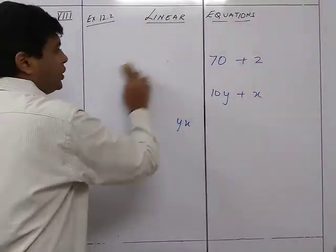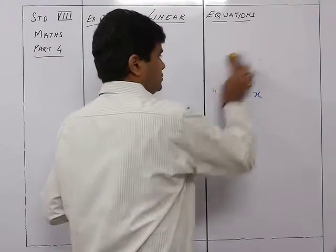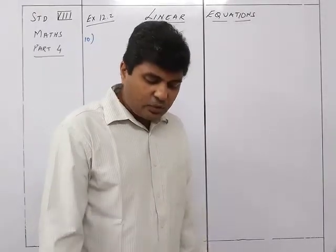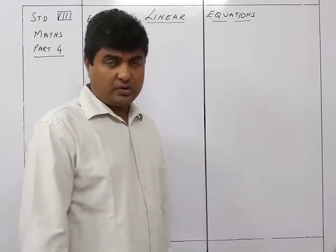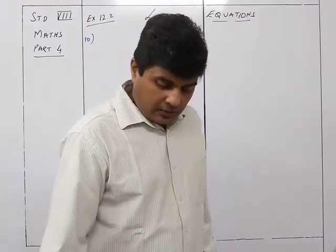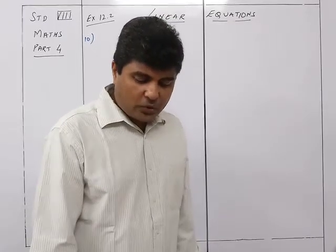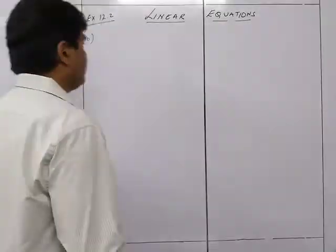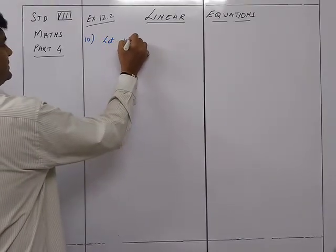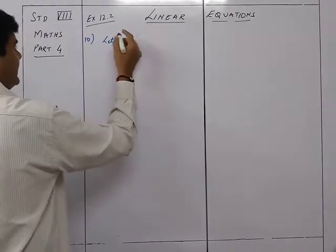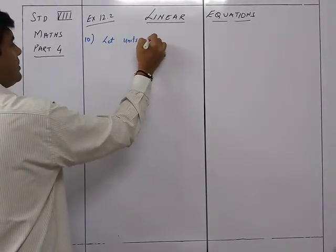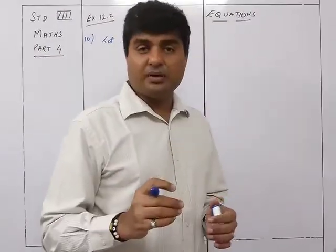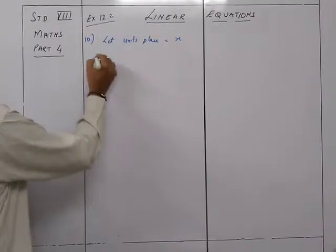Let's see sum number 10: the digits of a two-digit number differ by three. If the digits are interchanged and the resulting number is added to the original number, we get 143. What is the original number? We will let the units place be x. Since the digits differ by three, the other digit will automatically be x plus 3, so the tens place digit is x plus 3.